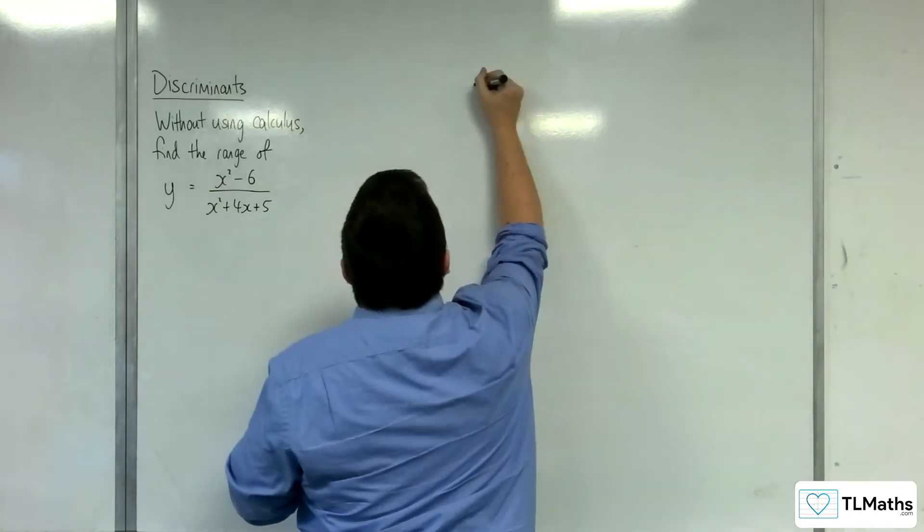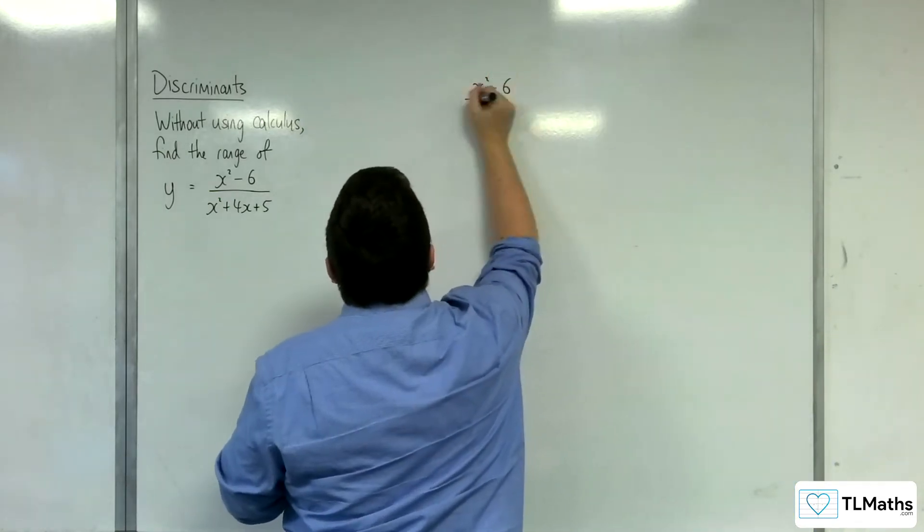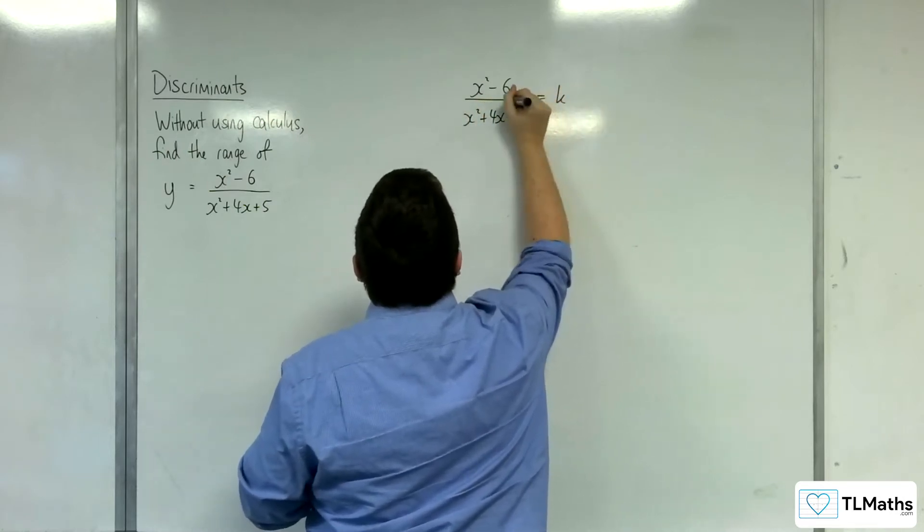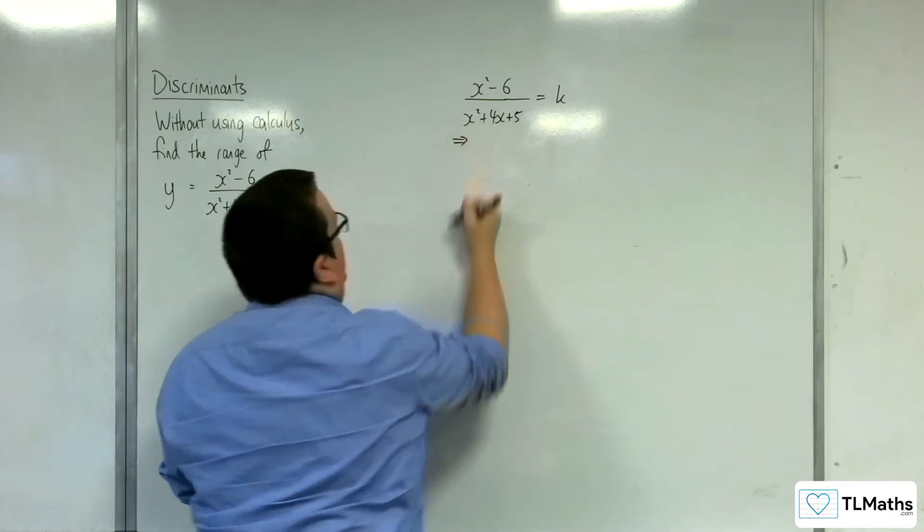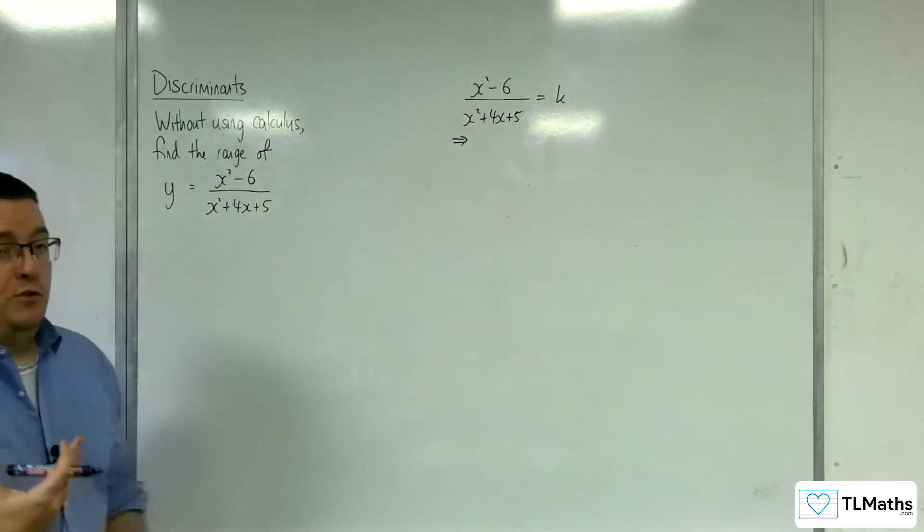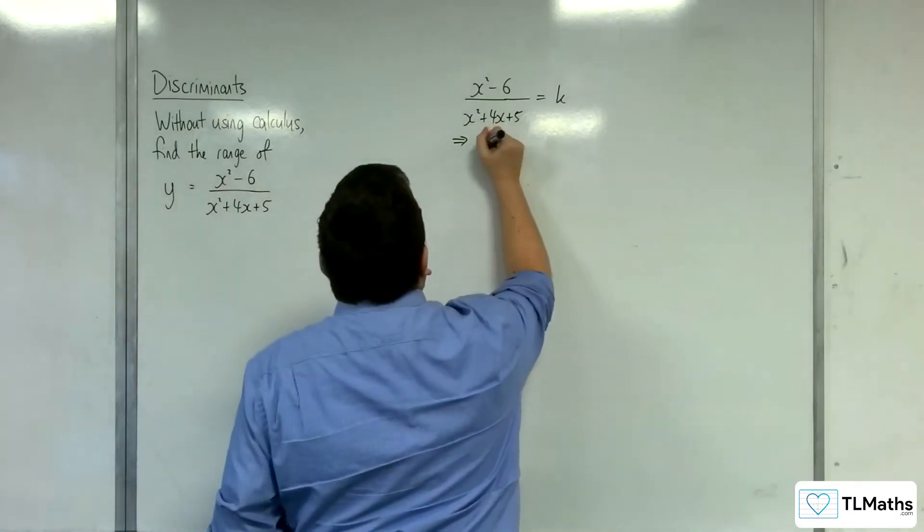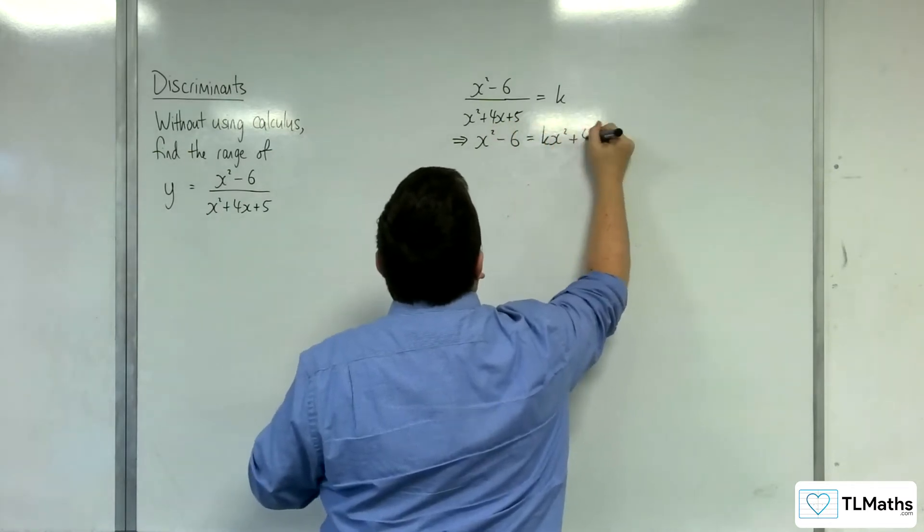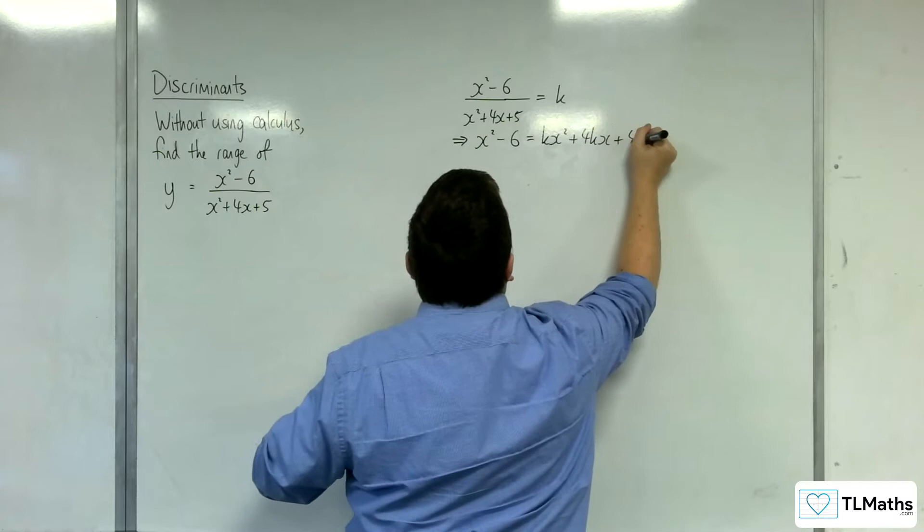So I'm going to put x squared minus 6 over x squared plus 4x plus 5 equal to k, just like we did in the previous video. So multiply up by the denominator. x squared minus 6 is equal to kx squared plus 4kx plus 5k.